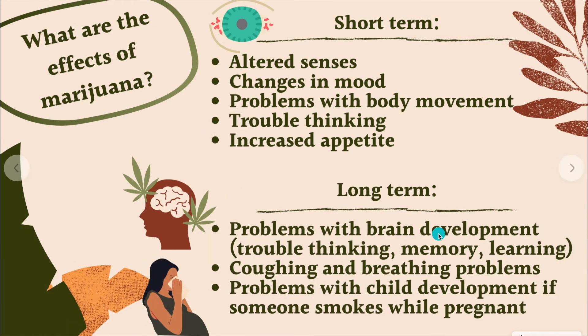What are the effects of marijuana? No matter what form you're using — smoking, eating, or drinking it as tea — it's going to cause changes in your body, specifically in your brain. Short-term effects include altered senses, thinking differently, and changes in mood. You may feel really happy or a little more calm.